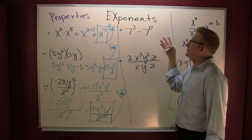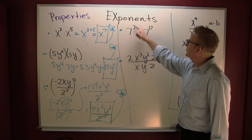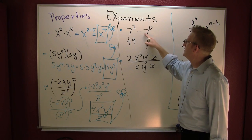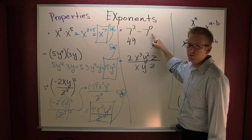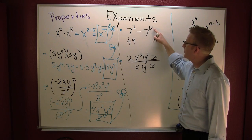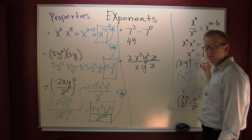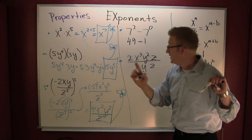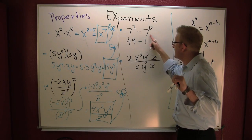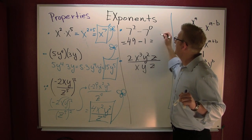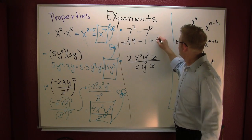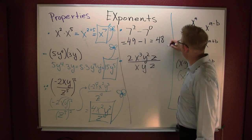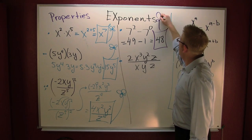Let's simplify this next one — it's a bit of an order of operations problem. What's seven squared? Forty-nine, because that's seven times seven. Now this one: take care of the exponent first. What's seven to the zero power? Anything to the zero power is one, so this is minus one. The zero is only on the seven, not on the negative. Down here it was on the minus two; here it's only on the seven. So we get 49 minus 1, which equals 48.